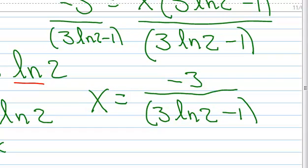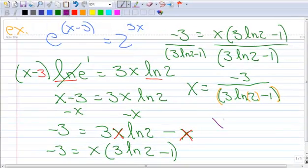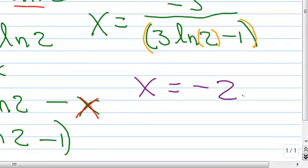When you type that in your calculator, don't forget to put parentheses around the whole denominator. When you hit that ln button, you get an extra parenthesis, so don't forget to close the parentheses around the 2 also. Do it on your own and then double-check my answer — it should be negative 2.779.